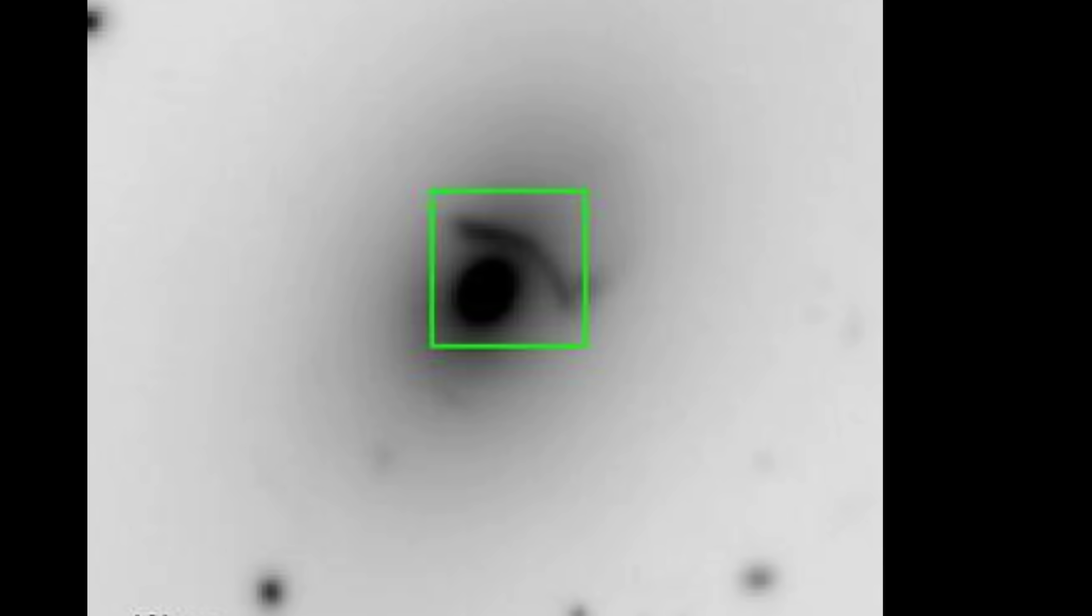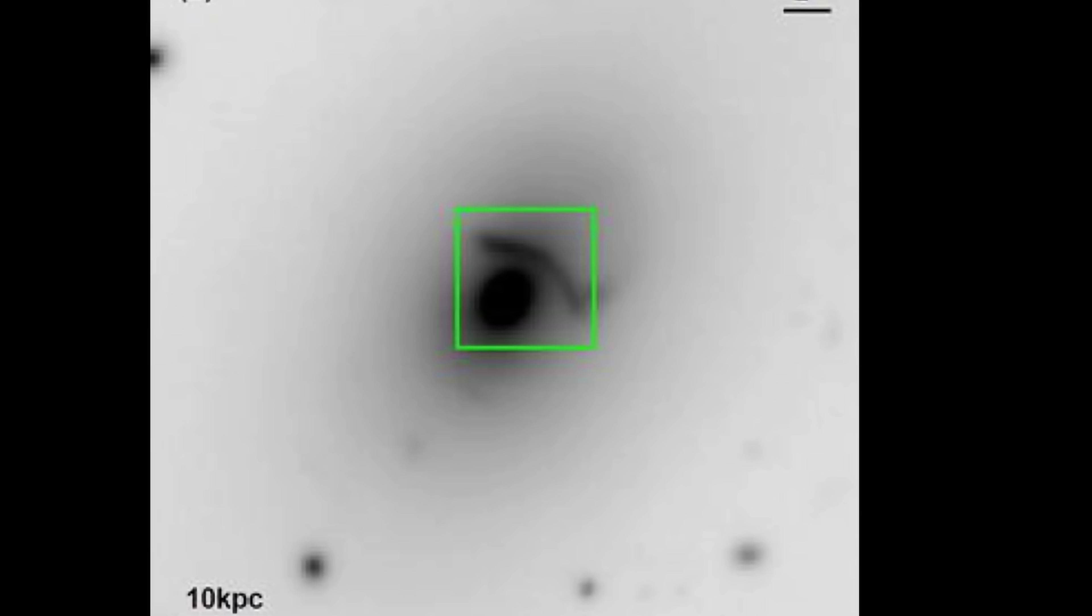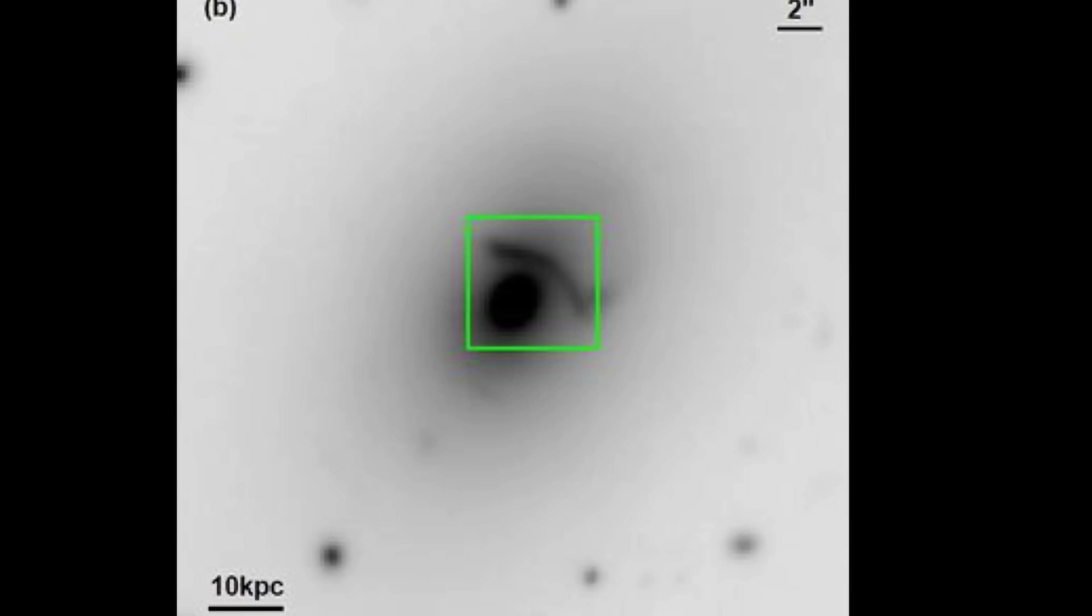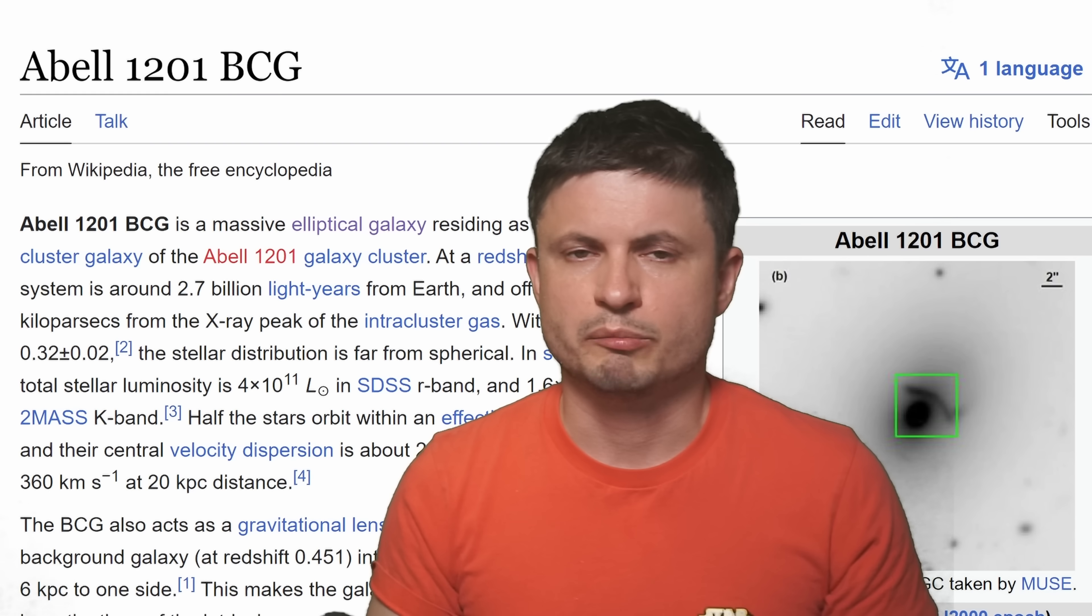But then there is this unusual object. This is known as the Abel 1201 BCG, Bright Cluster Galaxy. It's roughly around 2.7 billion light years away from planet Earth. But in this case, this very bright galaxy also seems to act as a gravitational lens, or basically it produces an Einstein ring. And it's actually sort of visible if you look at it really close. It basically sort of resembles an eye with an eyebrow.